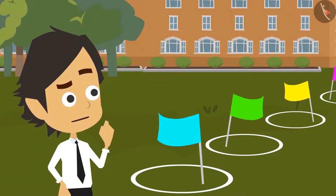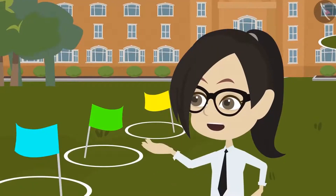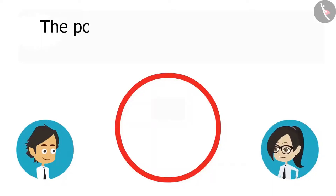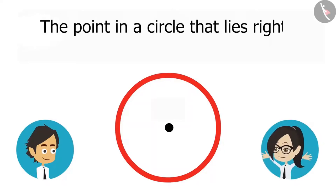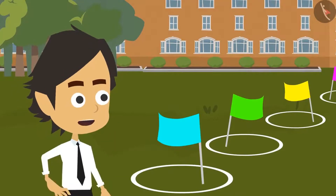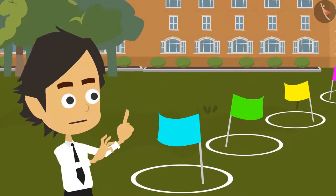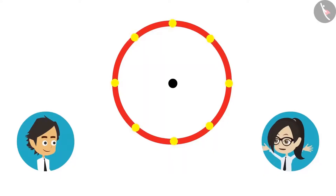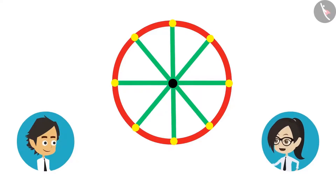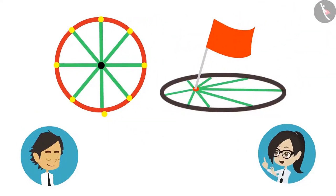This does not mean that all points will be considered as the center of the circle. The center is already there. The point inside a circle that lies right in the middle is called the center of a circle. This means that the center is not just anywhere in the circle, but right in the middle. And if we draw several lines from the center to different points on the boundary, all those lines will be of the same length. Whereas if we draw lines from the point where the flags have been placed, they will all be of different lengths. Now I have understood the mistake.